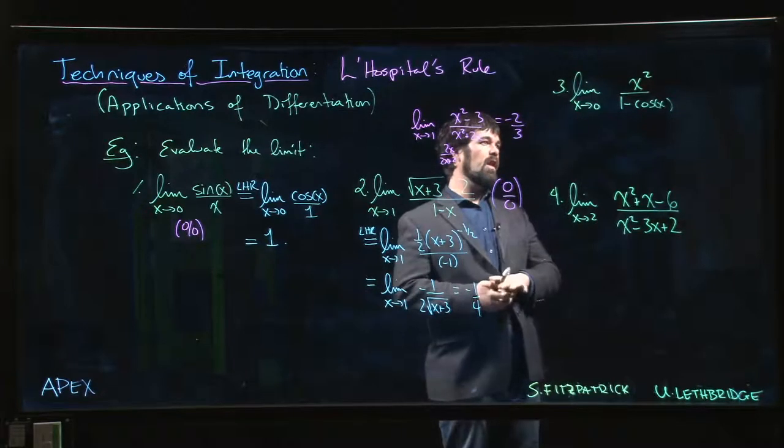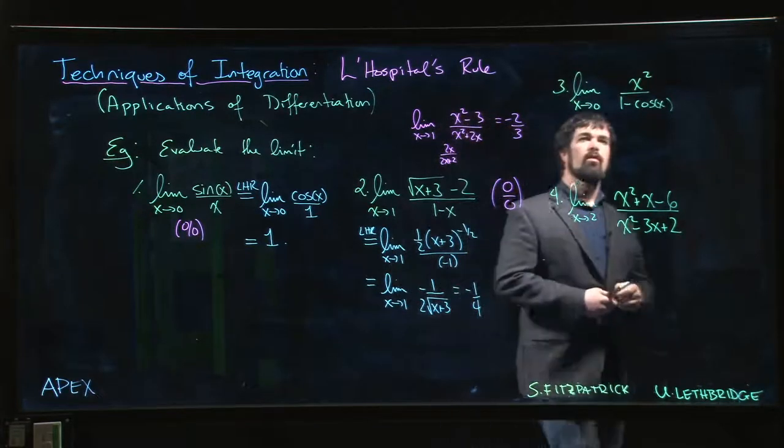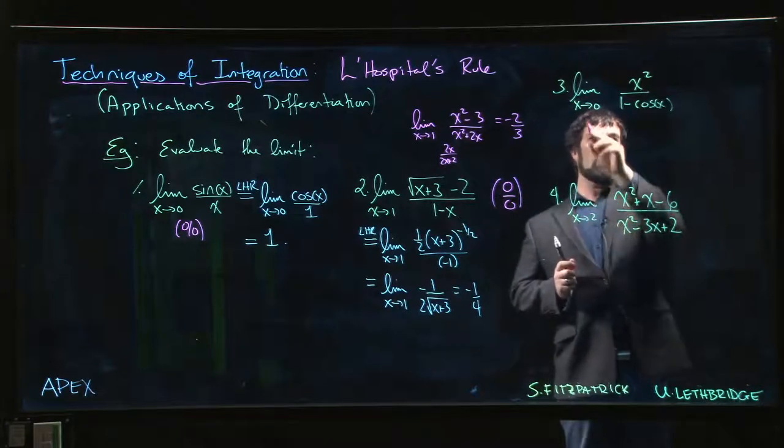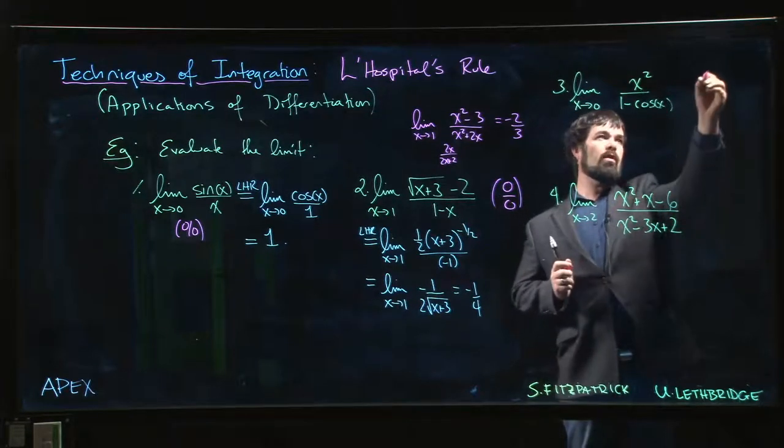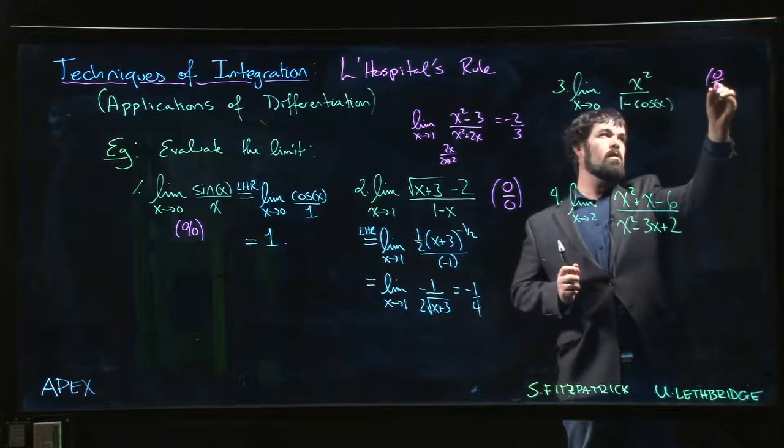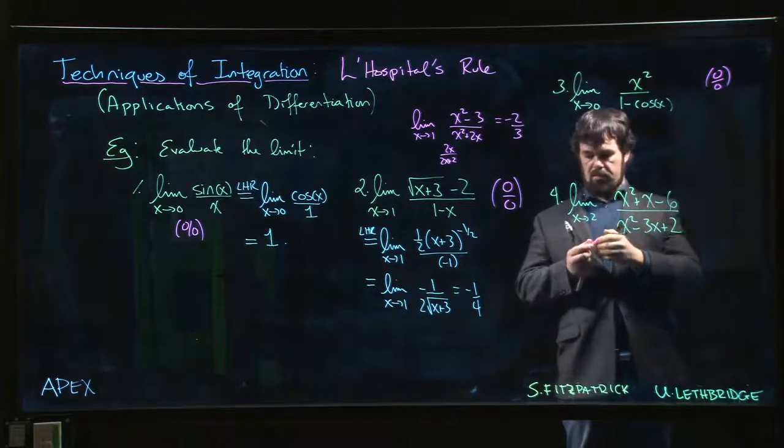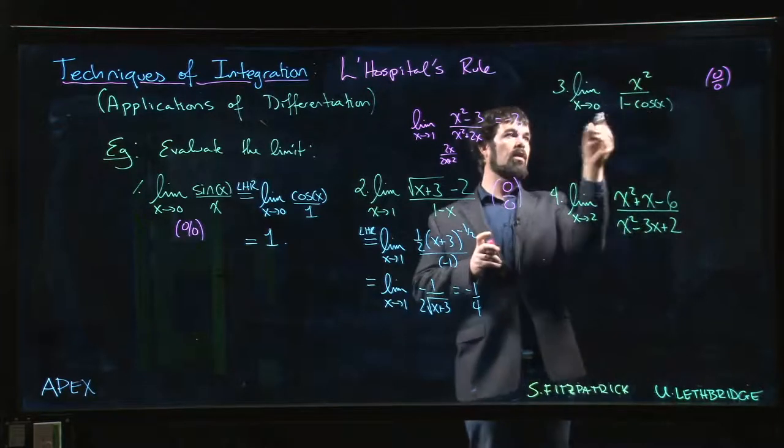Okay, coming up here for the next one: certainly we get 0 on the top when we put x equals 0. On the bottom, cosine of 0 is 1. So yes, we do have a 0 over 0 limit, so we go ahead and we apply L'Hopital's rule.